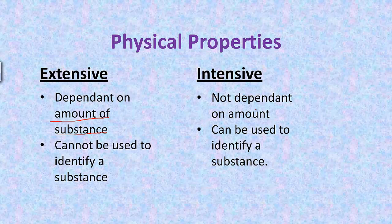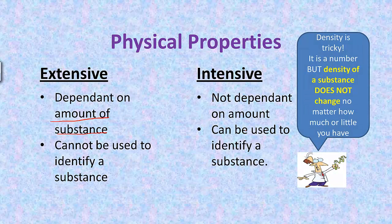Let's go through some examples. Density is a tricky one because it is a number that describes a substance, but the density of a substance does not change. So density is an intensive property — no matter how much or how little you have, it does not depend on the amount of a substance you have.